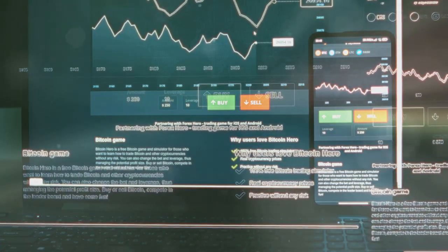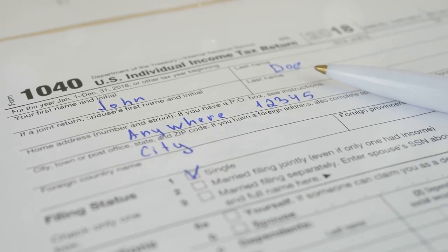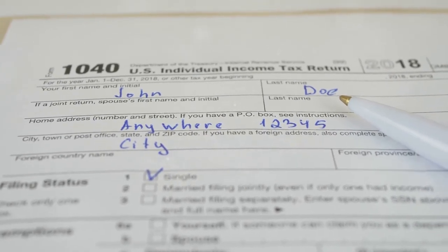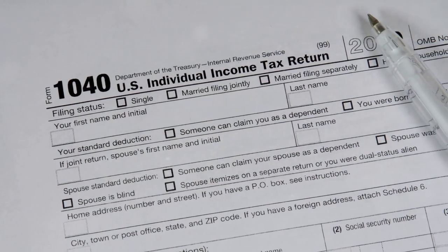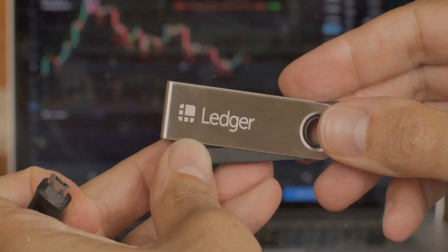...you traded Dogecoin for Bitcoin. Each trade needs its own line on the form: date you acquired it, date you sold it, and the gain or loss. It's a lot of details to keep track of. That's where Coin Ledger...